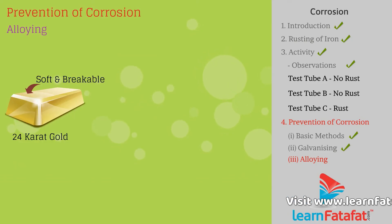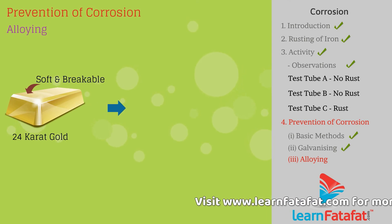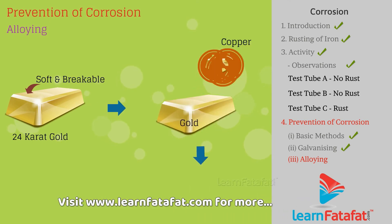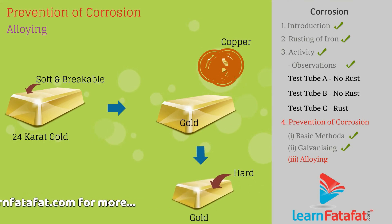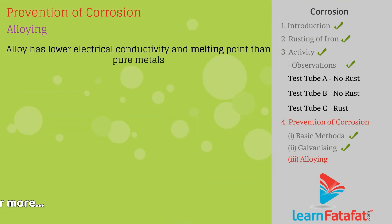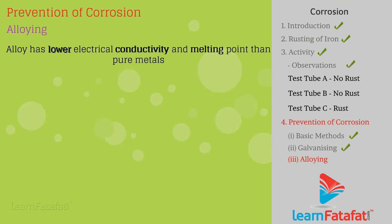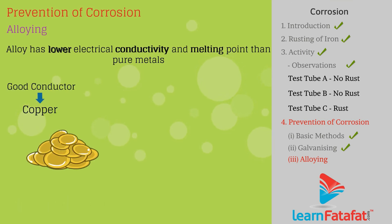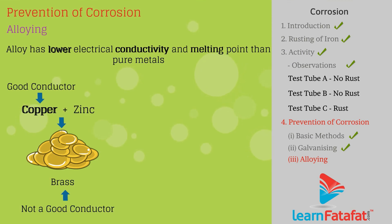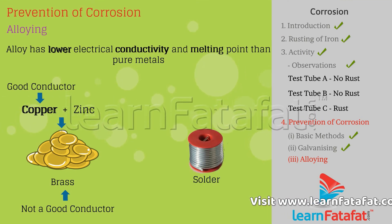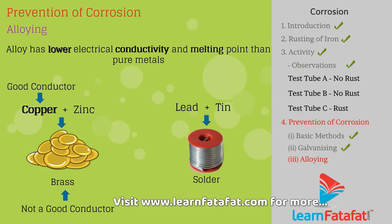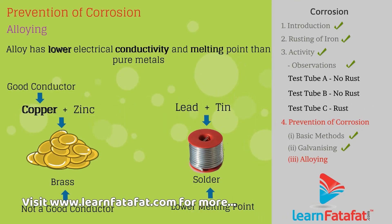For example, 24 karat gold is very soft and breakable. Hence, it is alloyed with copper to make it hard. Alloys have lower electrical conductivity and melting point than pure metals. Copper is a good conductor of electricity, but its alloy with zinc, known as brass, is not a good conductor. Solder, used while welding electrical wires together, is an alloy of lead and tin that has a lower melting point than these metals.